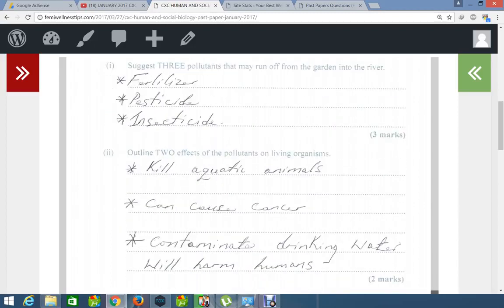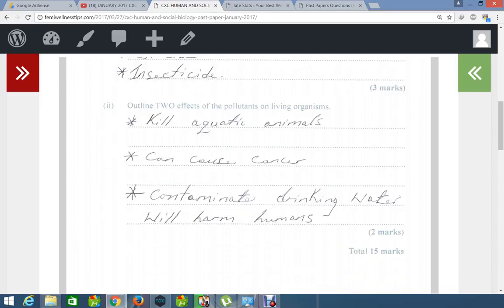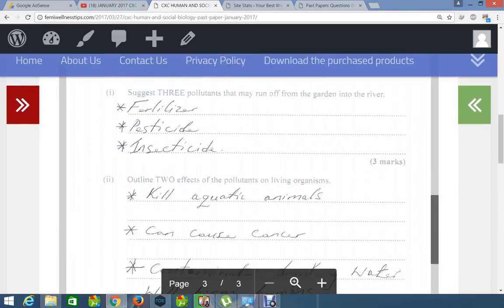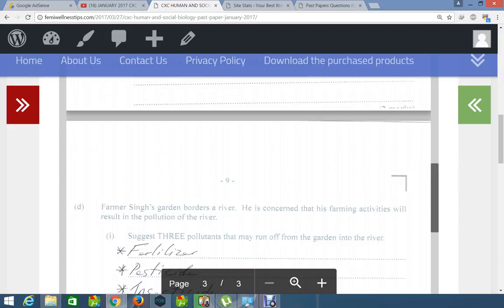Outline two effects of the pollutants on living organisms. One effect: kill aquatic animals. That includes anything that basically lives in the water, like fishes and the list goes on. Can cause cancer, that's the next one. And the last one I have: can contaminate drinking water, which will harm humans, for example. And that's it for question two.